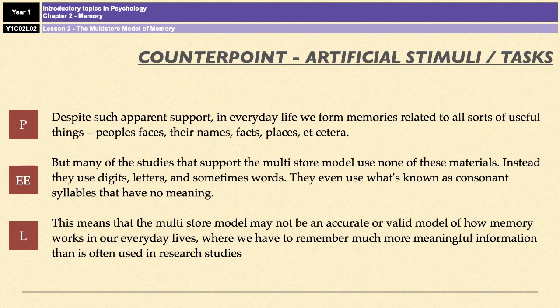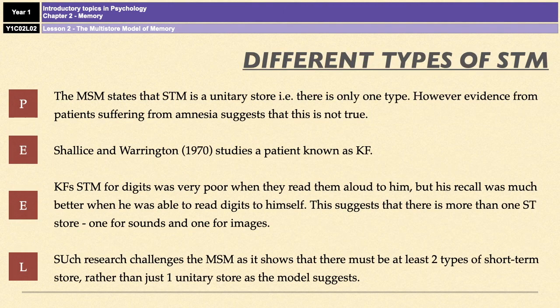Another limitation is the idea that there may actually be different types of short-term memory. Research support for this was provided by Shallice and Warrington, who studied an amnesia patient known as KF. KF's short-term memory for digits was very poor when they were read out loud to him, but his recall was much better when he could read the digits for himself. This suggests there is more than one type of short-term memory store — one for sounds and one for images — which challenges the multi-store model's claim of a single STM store.